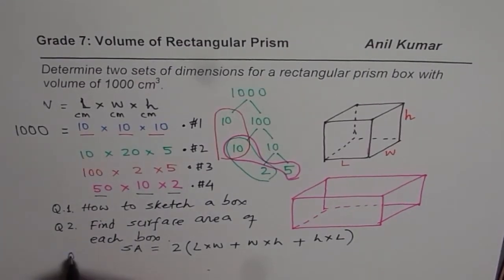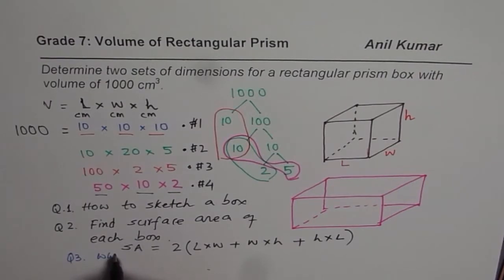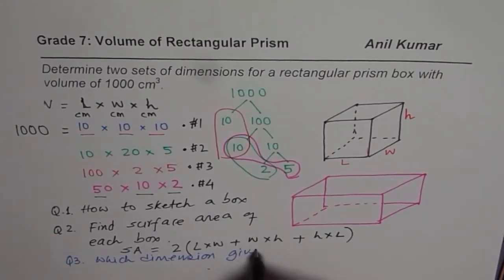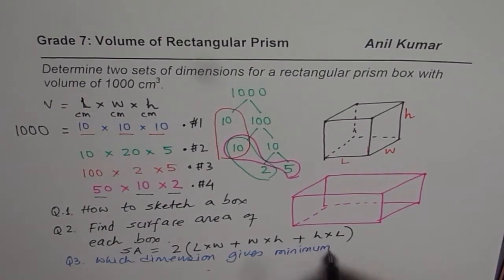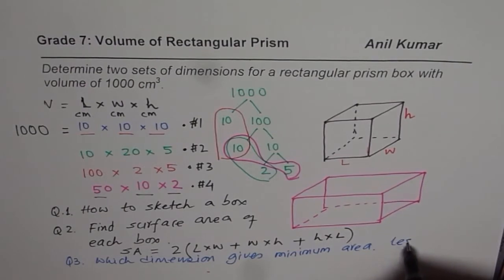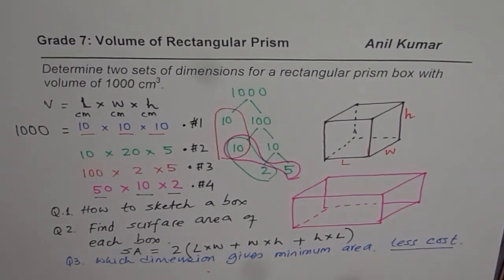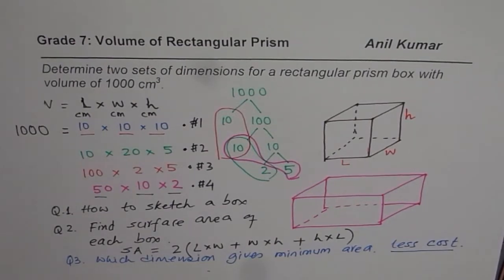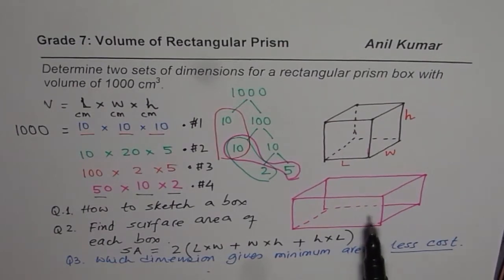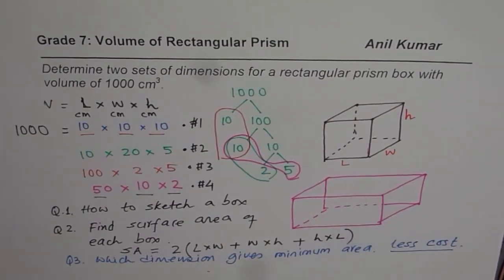And then find question number 3 will be which dimension gives minimum area. Now, can you tell me what is the importance of this minimum area? Minimum area means less material. So that will be less material, less cost. Less material means less cost. Do you see that? So, it is very important to have maximum volume and least area, surface area. So, find out of these dimensions, which one gives you the least cost since it is made up of material. And the cost of material depends on the surface area of such a box.